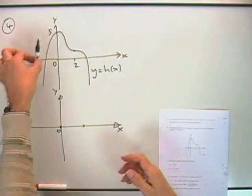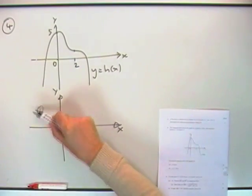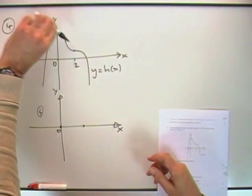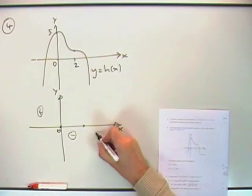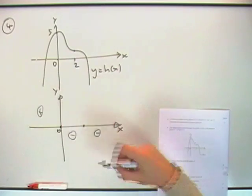Before it got there, it was heading up, so I've got positive values. After 0 it's heading down, so I've got negative values, and again after 2 I've got negative values. I just need to make a graph go through there.